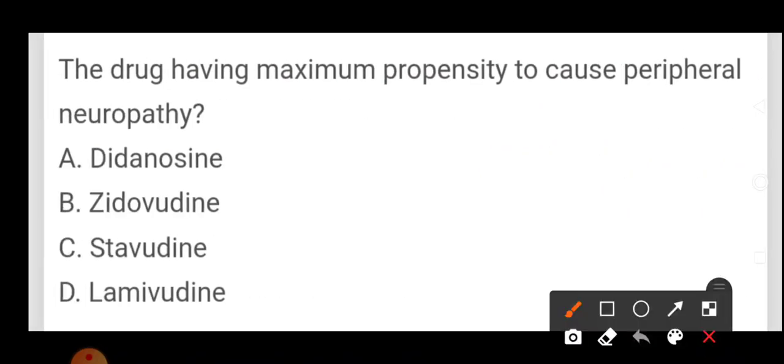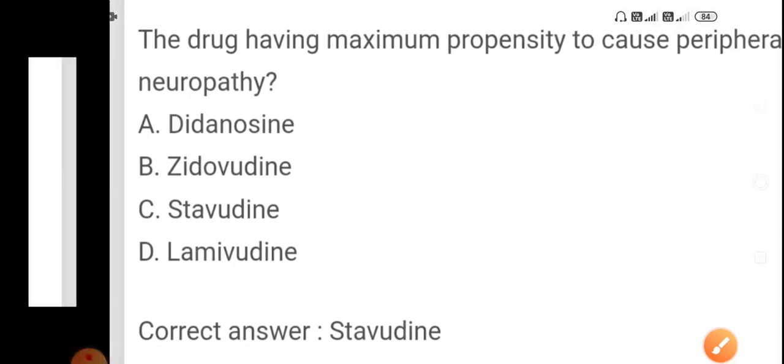Drug having maximum propensity to cause peripheral neuropathy: didanosine, zidovudine, stavudine, lamivudine. The drug which causes maximum peripheral neuropathy is stavudine.